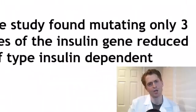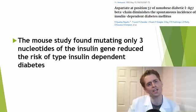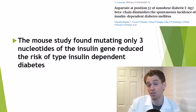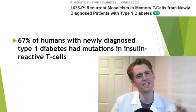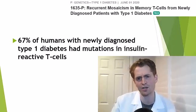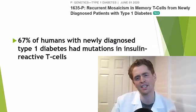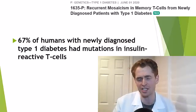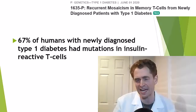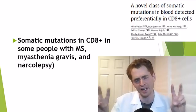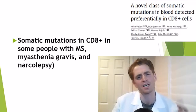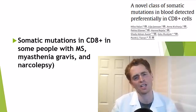But is there any actual evidence for this theory? A mouse study found that mutating only three nucleotides of the insulin gene — changing just one amino acid of the protein — reduced the risk of type 1 diabetes, suggesting tiny changes in DNA can change disease risk. A human study found that 67% of people with newly diagnosed type 1 diabetes had mutations in T lymphocytes reactive against insulin; the mutations were highly variable, but some instances showed the same mutation in different people. Another study found somatic mutations in CD8-positive killer T cells in some people with multiple sclerosis, myasthenia gravis, and narcolepsy — the latter being thought likely an autoimmune disease when sudden-onset with cataplexy.